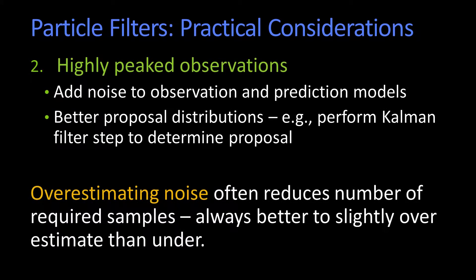A second problem is: what if p of z given x — what if your likelihood is incredibly peaked? You multiply the likelihood times the weights of the samples. If it's incredibly peaked, that means that p of z given x is zero almost everywhere else. That's not very helpful because it means you've wiped out all of your possible predictions. In general, you want to allow for noise in your p of z given x — don't be so systematic about it.